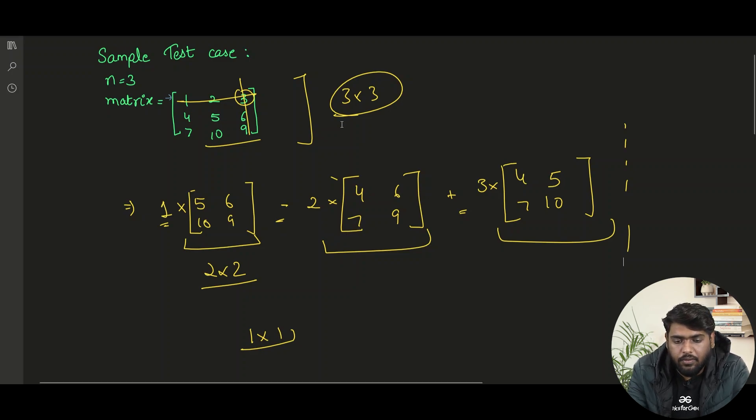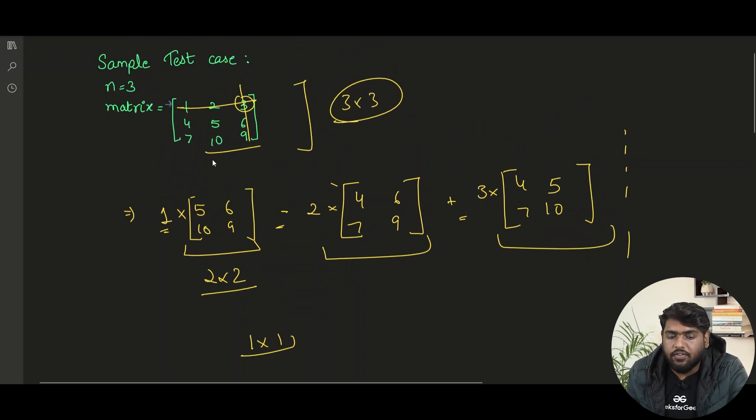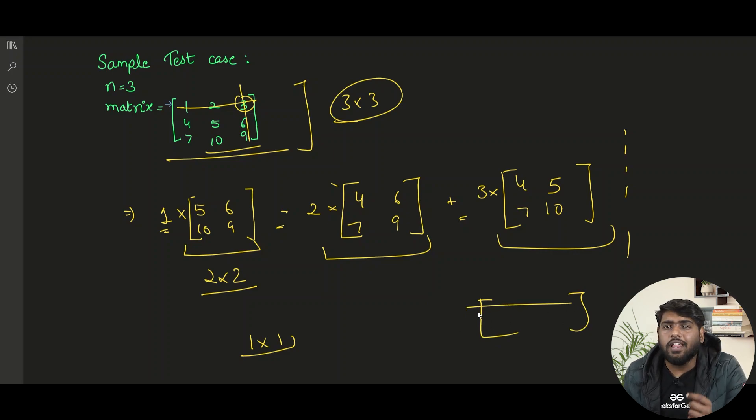Now if you see, we begin with 3 cross 3 matrix. For finding out its answer, we need the solution of 2 cross 2 matrices. And similarly, if we solve those two, we'd be needing an answer of 1 cross 1 matrix. The problem is breaking down into smaller chunks and the type of problem remains the same. What is the determinant? Thus, we surely can use recursion here.